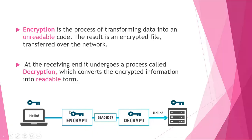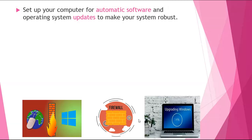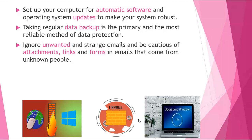As you can see in this picture how it is done. Set up your computer for automatic software and operating system updates to make your system robust. Data backup is the primary and most reliable method of data protection. Ignore unwanted and strange emails and be cautious of attachments, links, and forms in emails that come from unknown people.